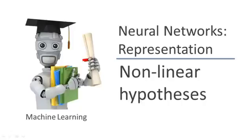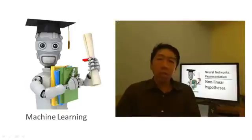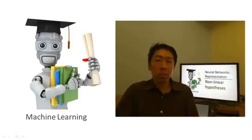In this and the next set of videos, I'd like to tell you about a learning algorithm called a neural network. We're going to first talk about the representation and then in the next set of videos talk about learning algorithms for it. Neural networks is a pretty old idea but had fallen out of favor for a while. But today it is the state of the art technique for many different machine learning problems.